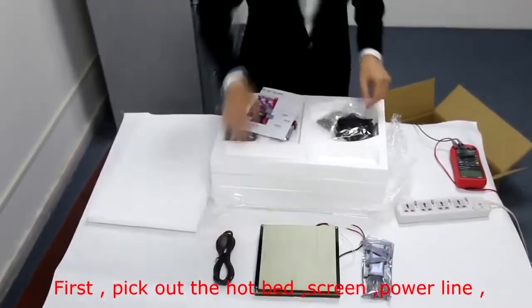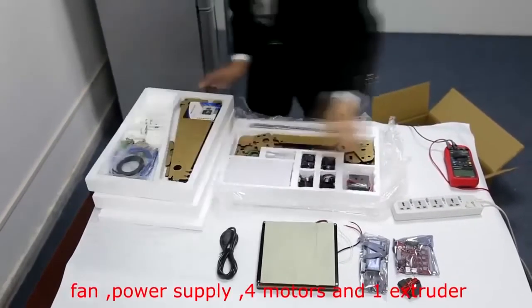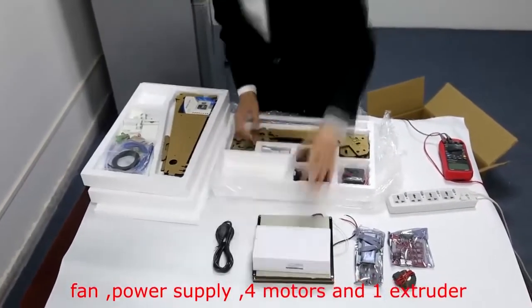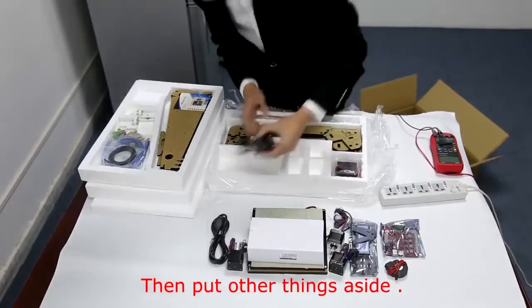First, pick out the hotbed, screen, power line, mainboard, fan, power supply, four motors, and one extruder. Then, put other things aside.